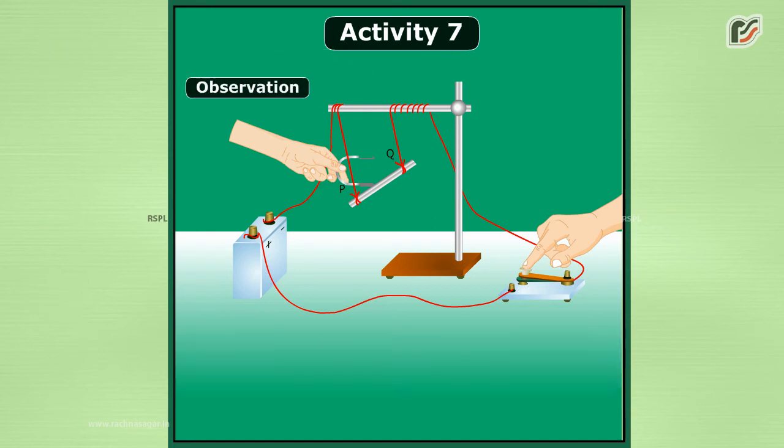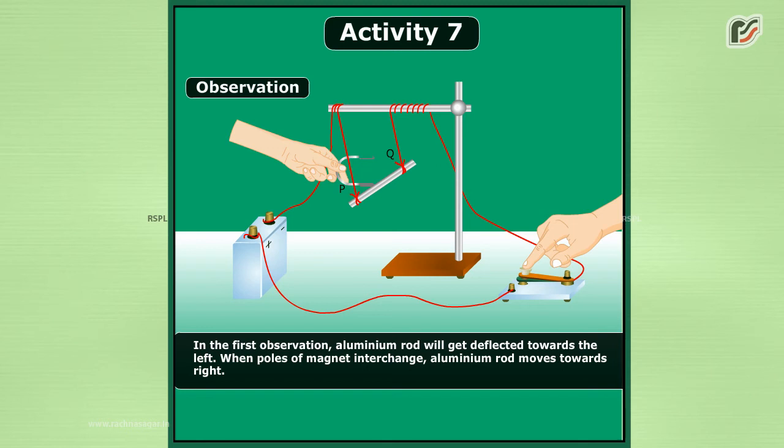Observation: In the first observation, aluminum rod will get deflected towards the left. When poles of magnet interchange, aluminum rod moves towards right.